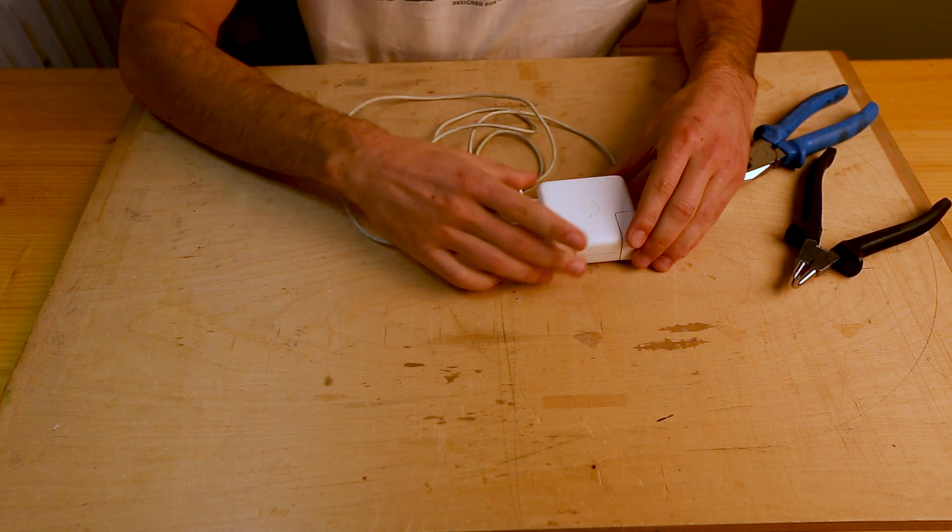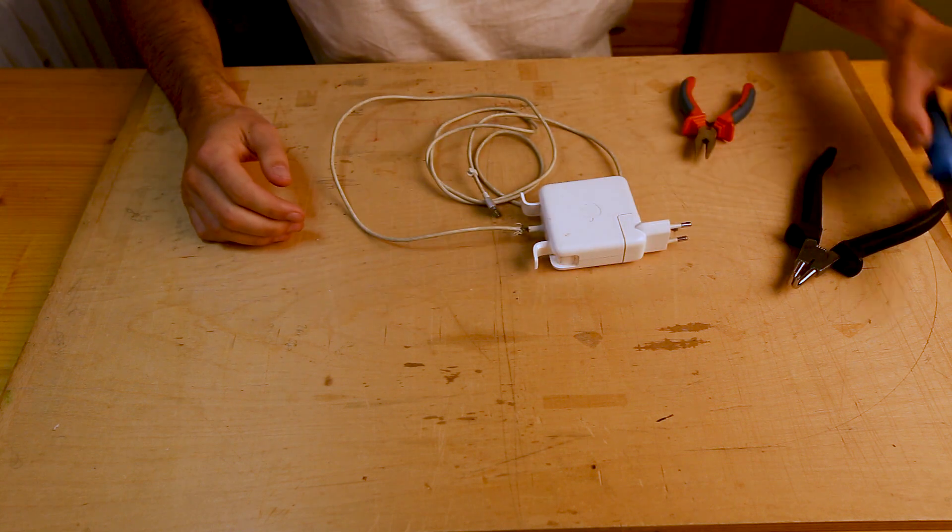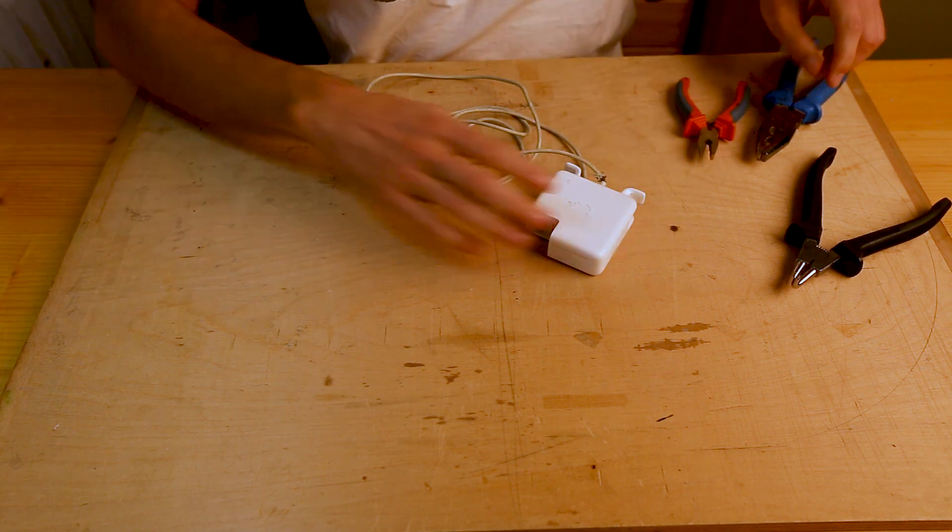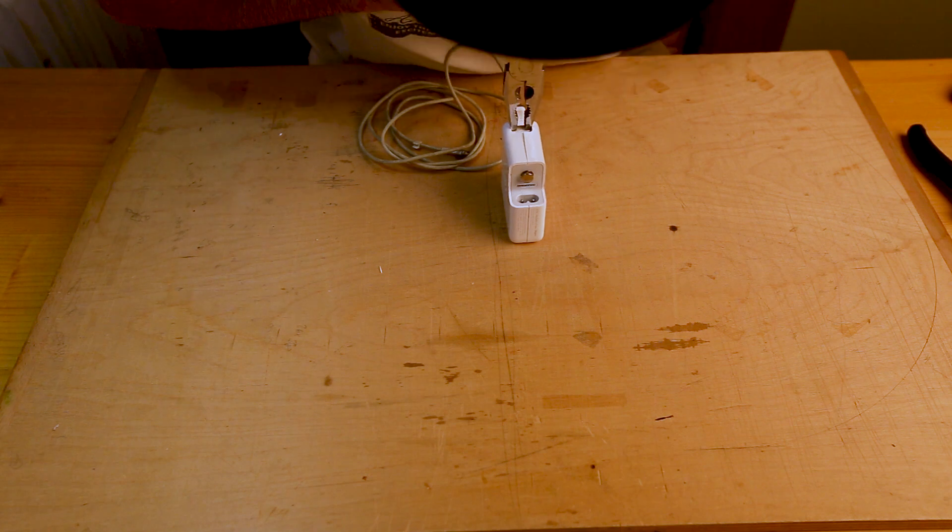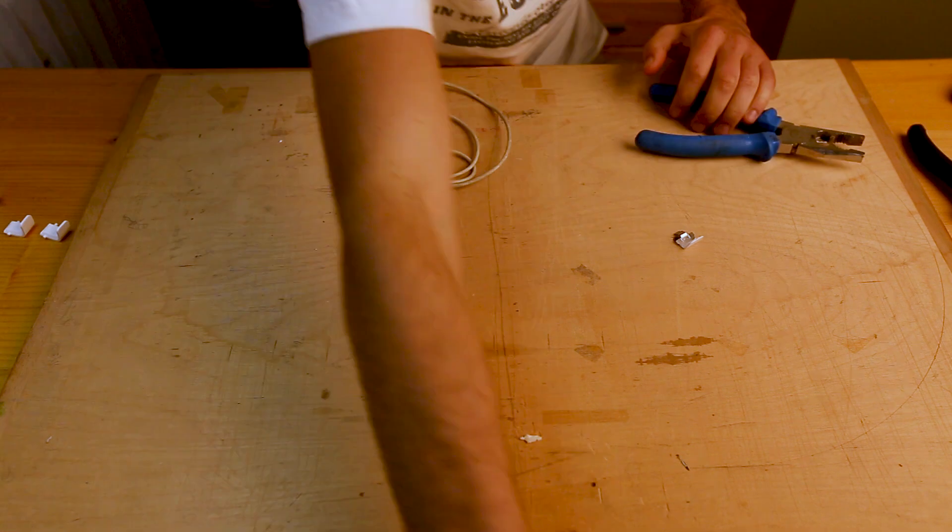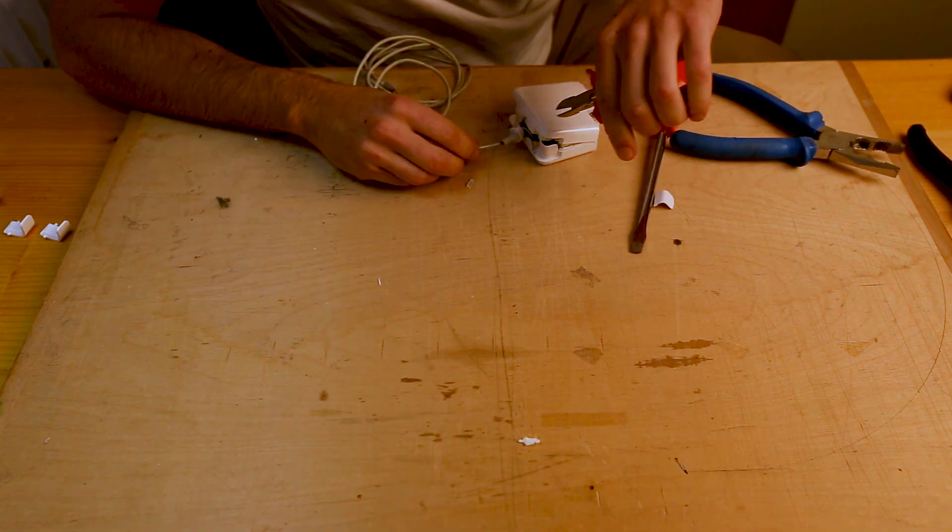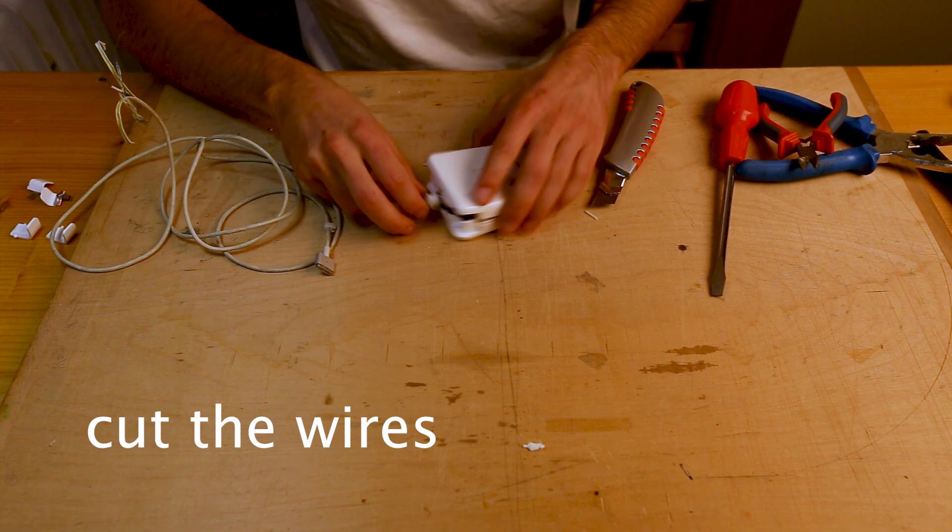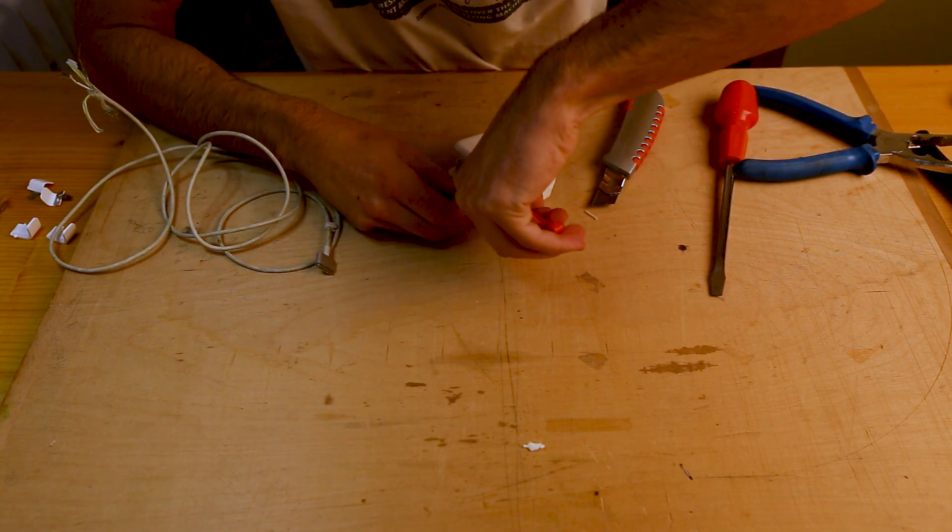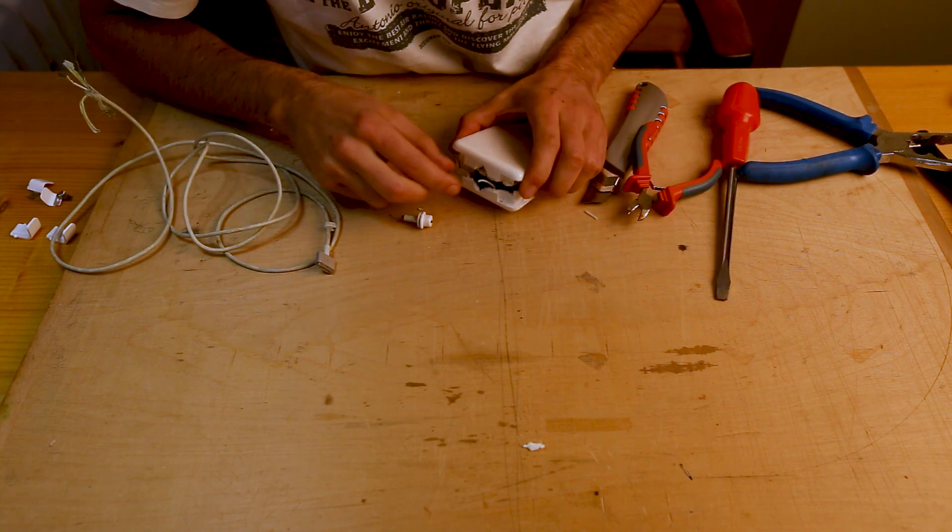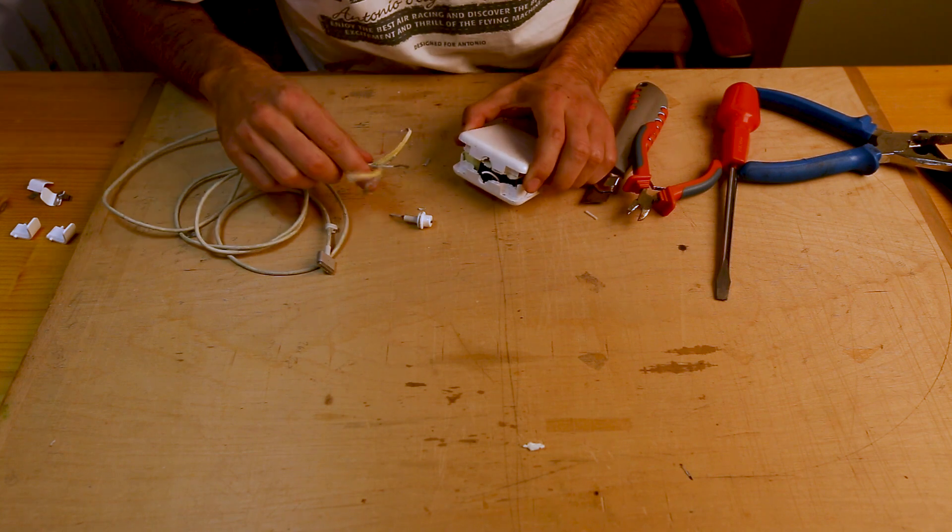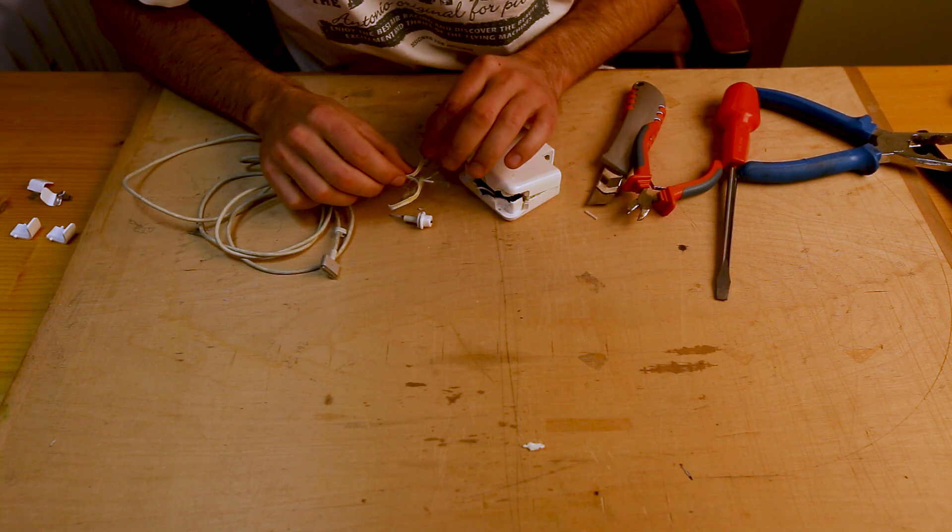Now we are going to pop it open using just regular pliers. First, let's get rid of this damaged part, and then we are going to strip those two wires and connect them back.